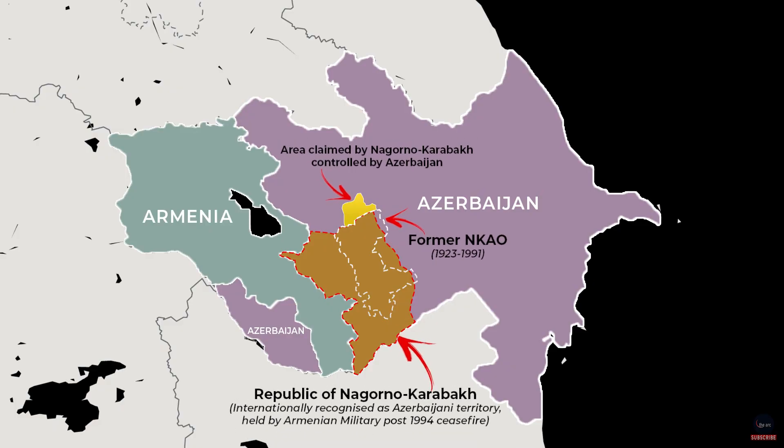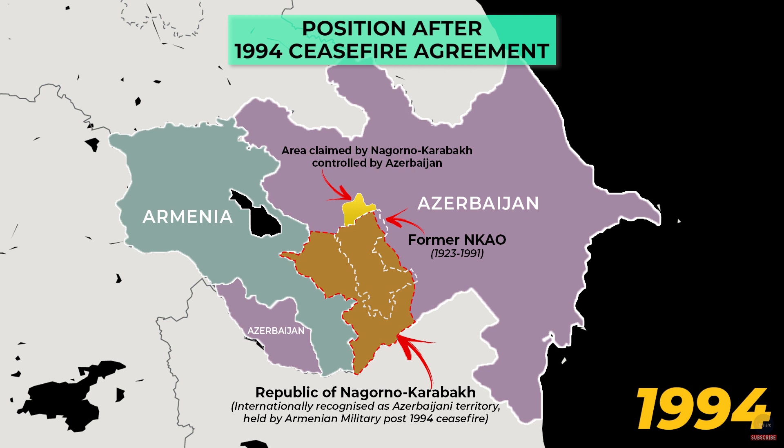The ethnic conflict that led to the Nagorno-Karabakh war resulted in ethnic cleansing of Armenians from Azerbaijan and Azerbaijanis from Armenia and Nagorno-Karabakh. Russia then brokered a ceasefire between the two sides in 1994 and this was the position after the 1994 ceasefire agreement.